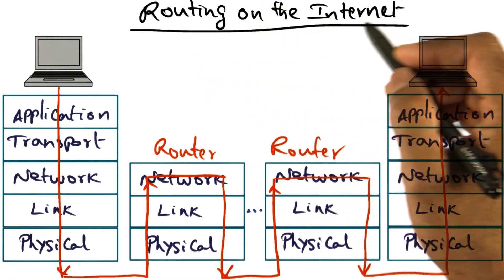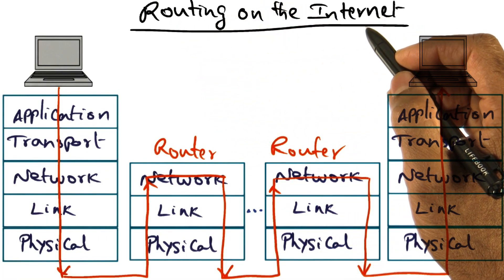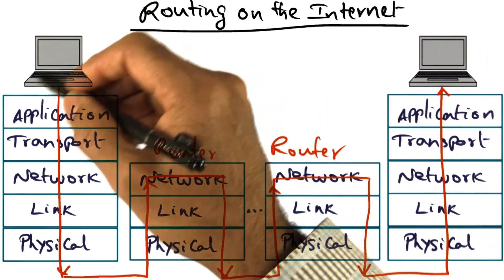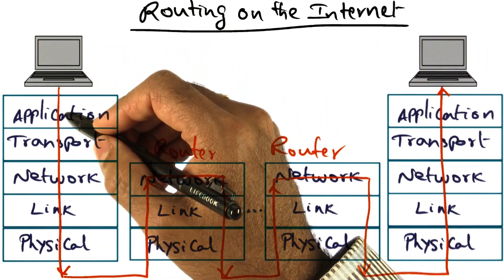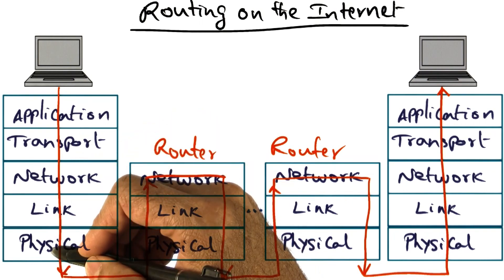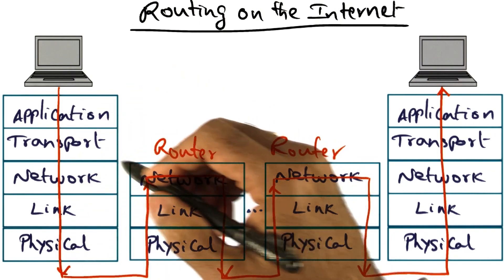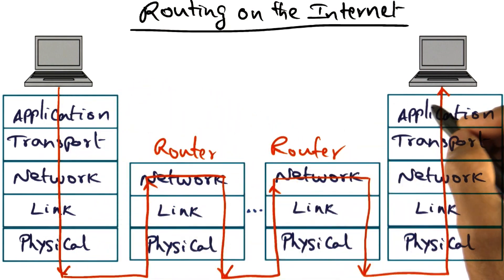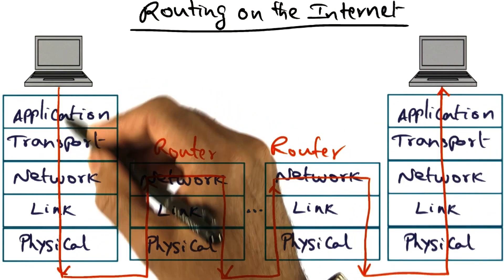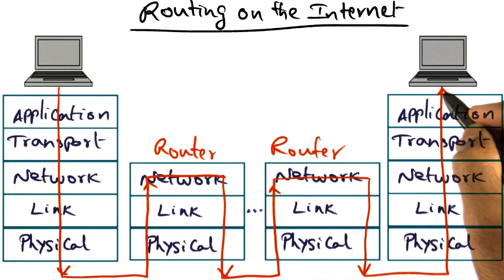Normally, when we think about routing of packets on the internet, typically what happens is at the source node, you create a network packet and go through the layers of the software stack on the sending node, and send the packet out on the network. This network packet has a desired destination, and it has to go through a whole number of intermediate routers in order to get to its eventual destination.